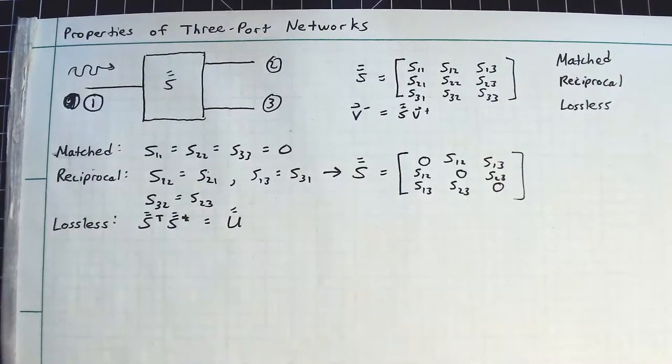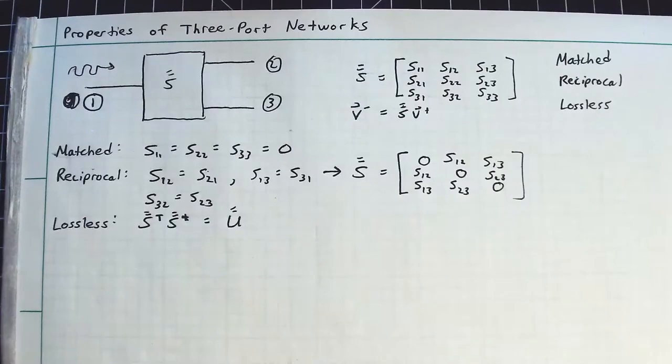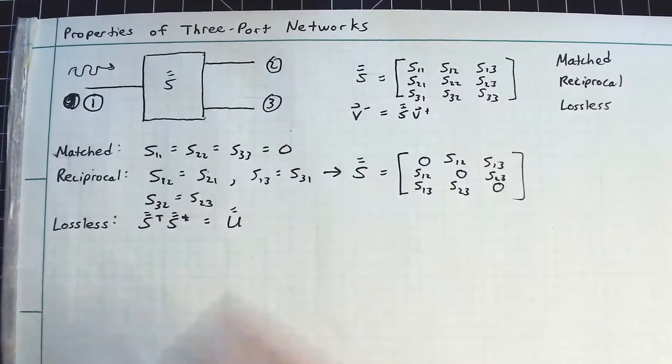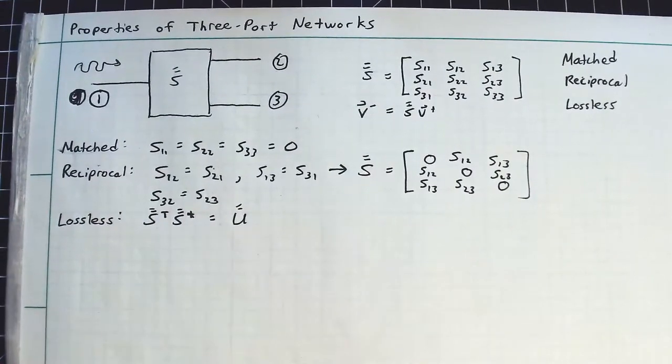But this imposed the condition that S transpose times S conjugate is equal to the identity matrix, or the unity matrix. So all of my main diagonals had to equal one.